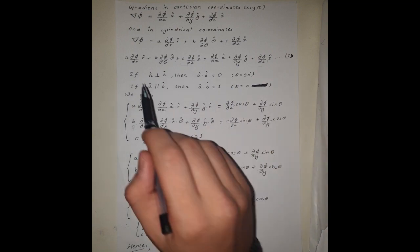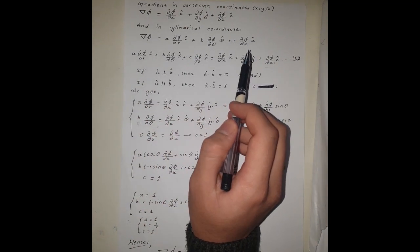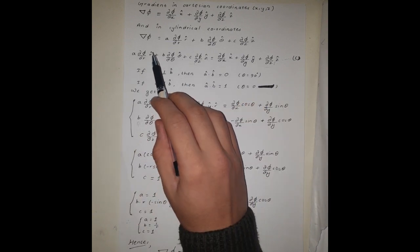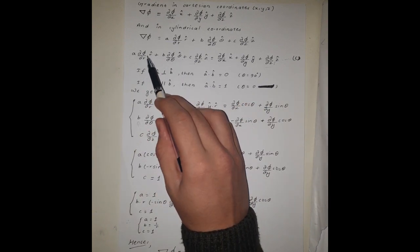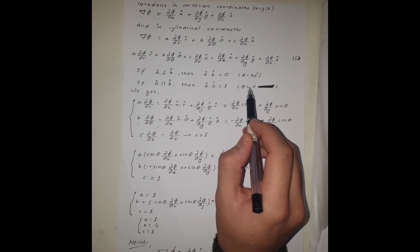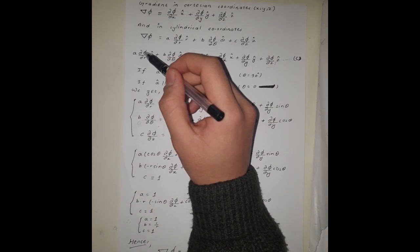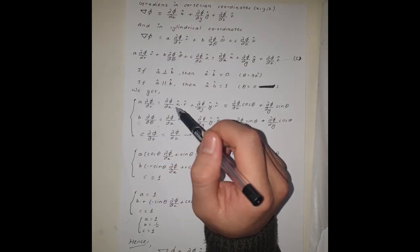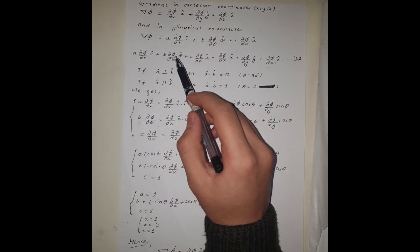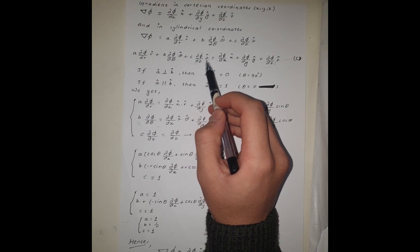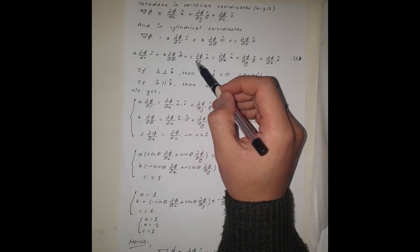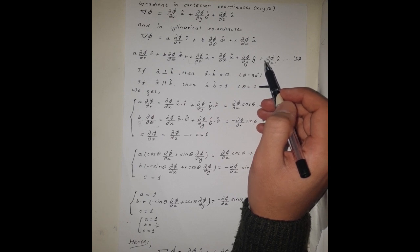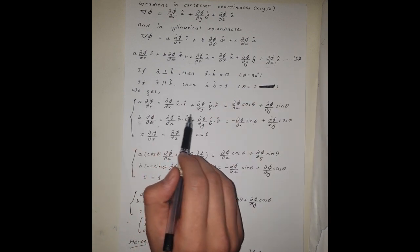Now let's multiply the expression by the r-hat unit vector. Taking the dot product of a unit vector with itself gives 1, so we are left with only the first term. Since r-hat, theta-hat, and z-hat are perpendicular to each other, the remaining terms are 0, and we end up with a simplified expression.